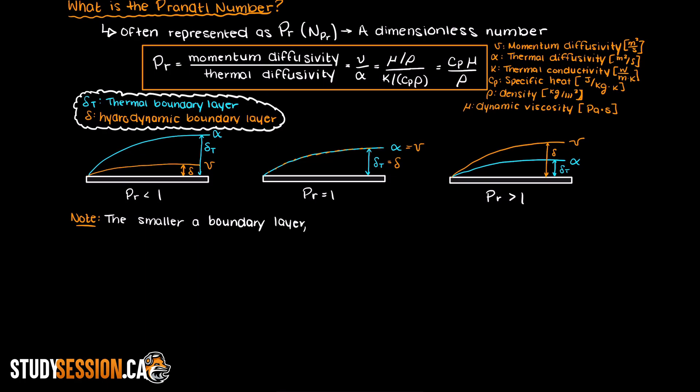The Prandtl number is a parameter specific to a fluid and has nothing to do with the matter that it is interacting with, however it does fluctuate with the fluid's temperature and pressure.